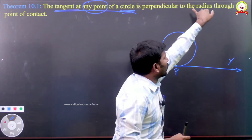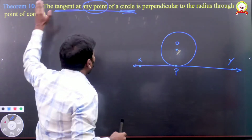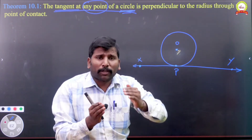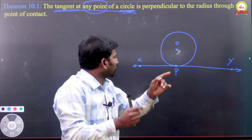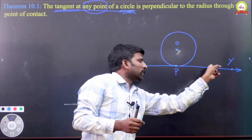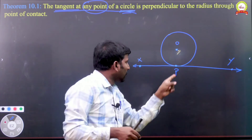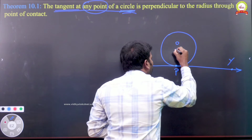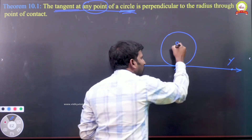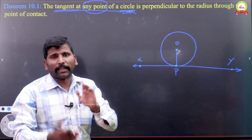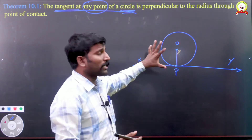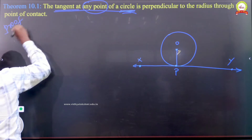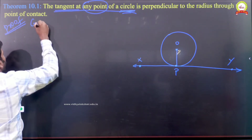It is perpendicular to the radius through the point of contact. The point of contact means the common point for both the circle and the tangent — that is P. P is the point of contact. Through the point of contact, we have to draw one radius, and the radius makes 90 degrees. This is the given detail, so let me write the given concept.